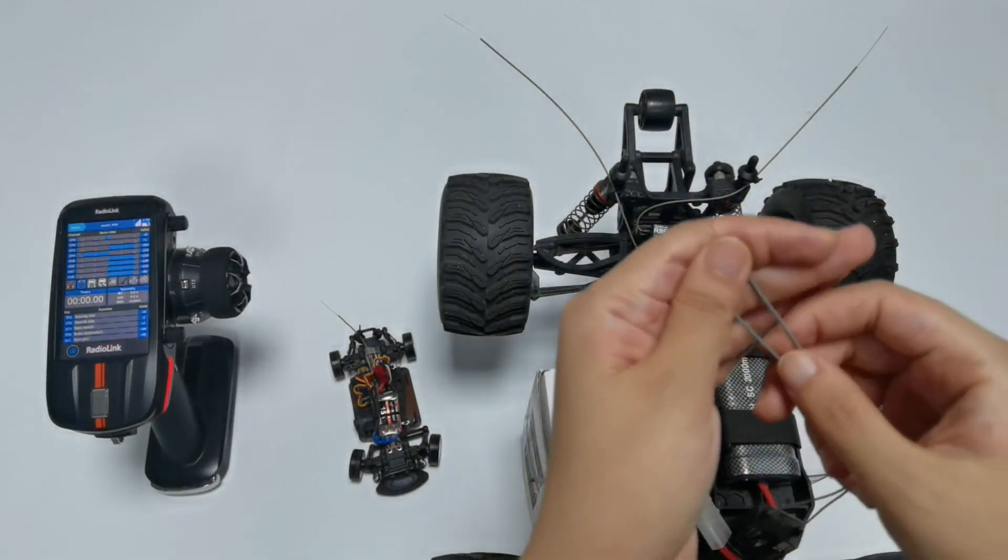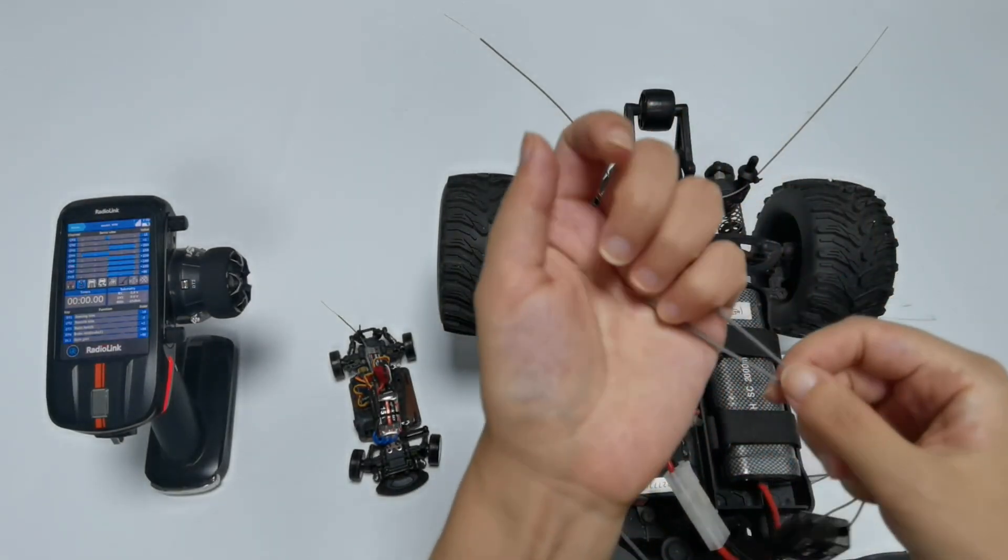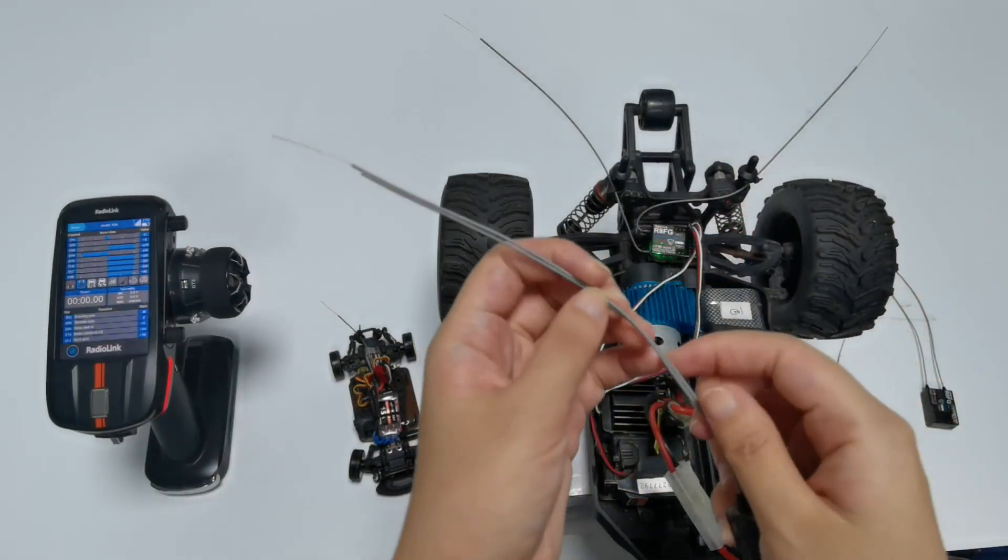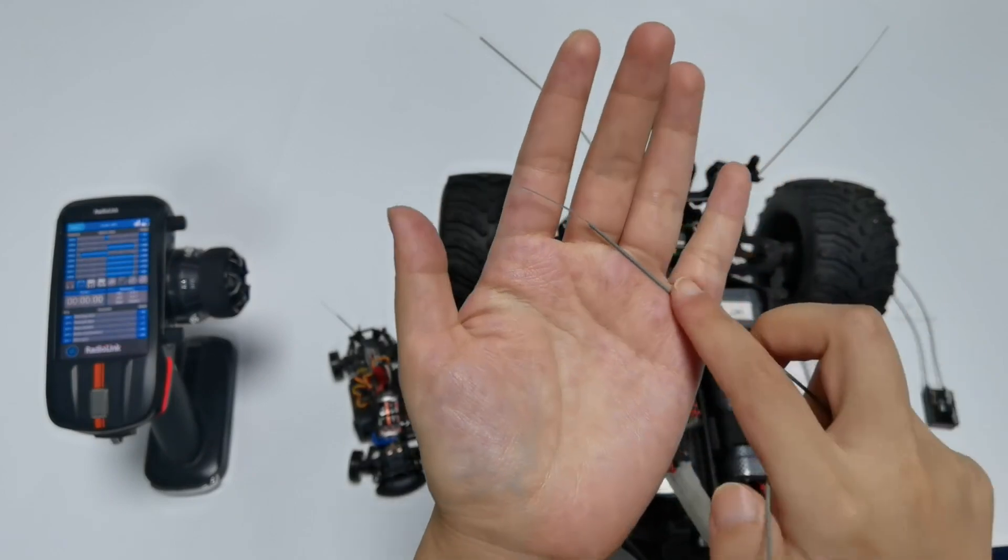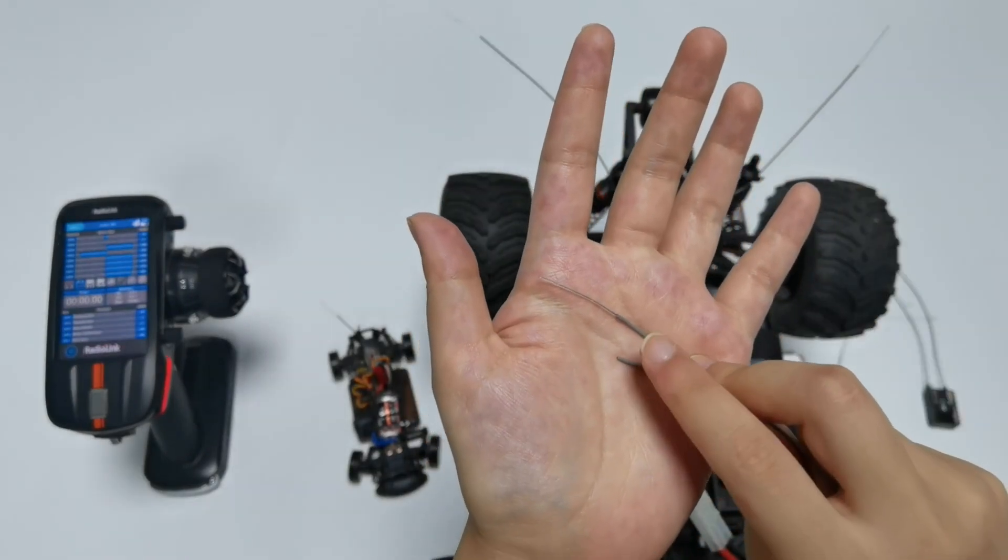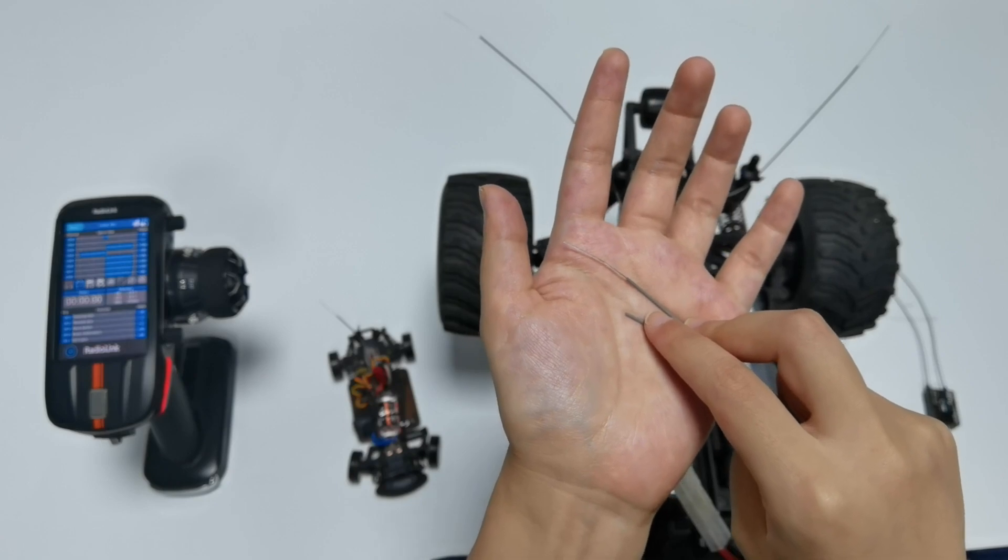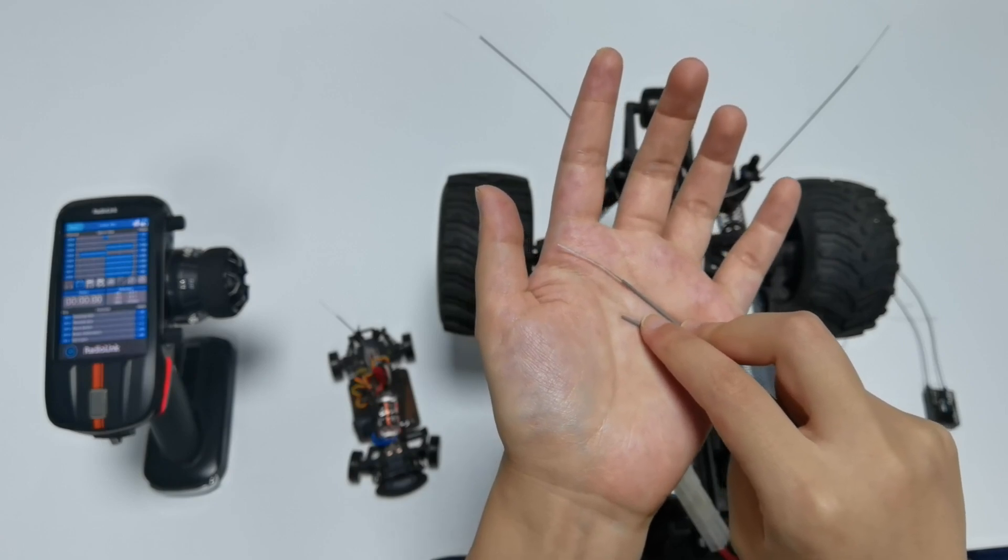For example, we can see the antenna of this R8FG is in good condition, but the antenna of another R8FG is damaged. So for the receiver with damaged antenna, the RSSI is abnormal and the control range is short.